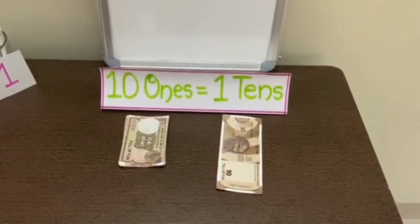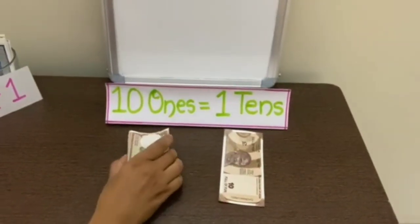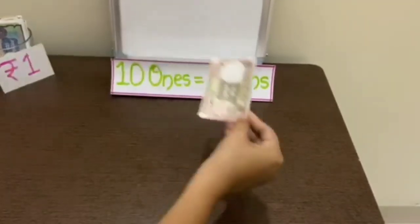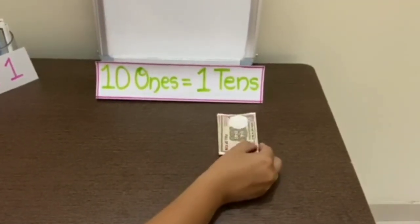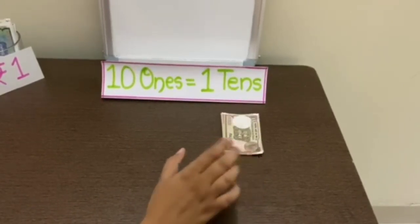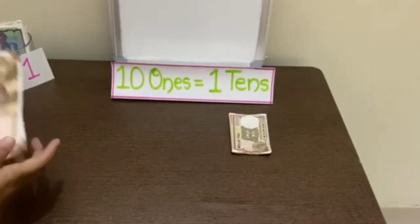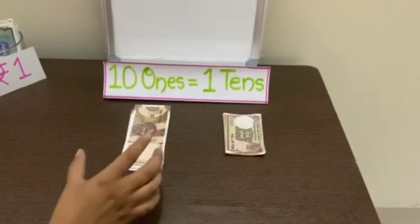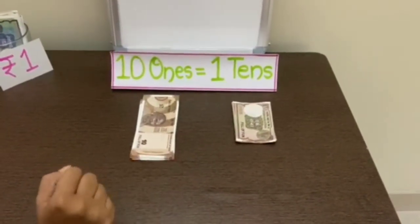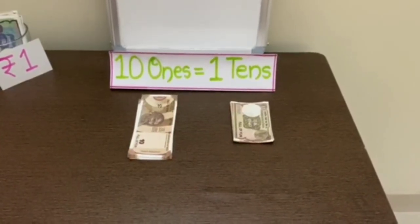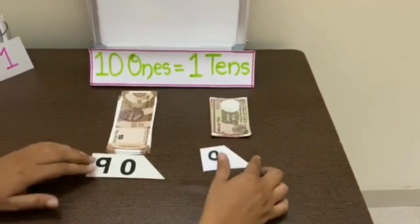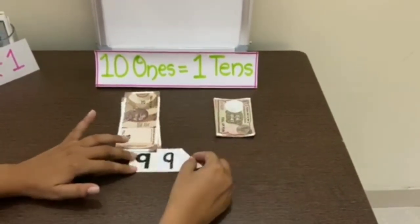Let us make some new numbers with help of currency notes. Here I have taken 9 notes of rupees 1, which means they are 9 rupees. And next we have 9 notes of rupees 10, which means they are equal to 90 rupees. Now we will take man cards — 90 and 9 — so it becomes 99.